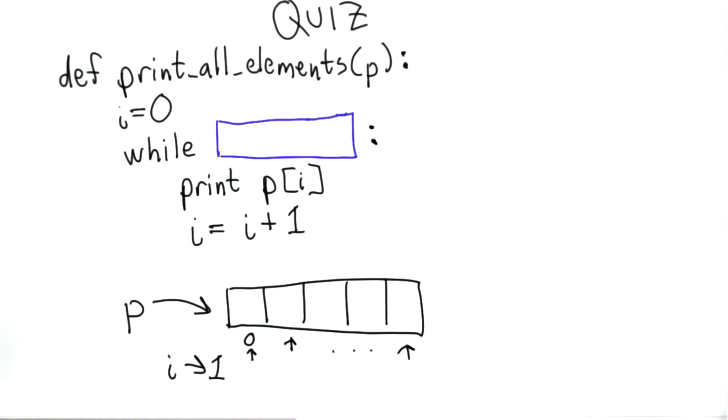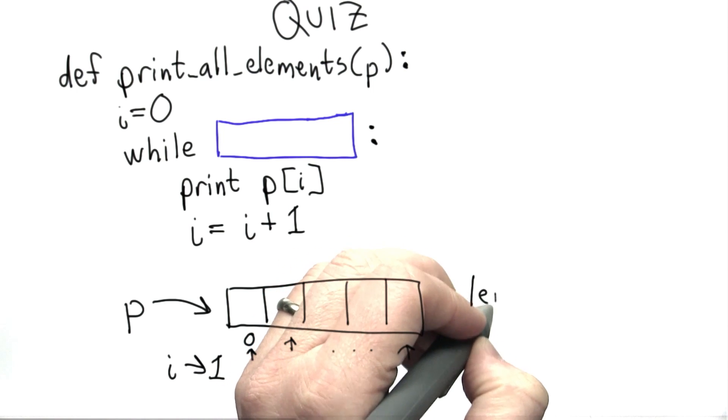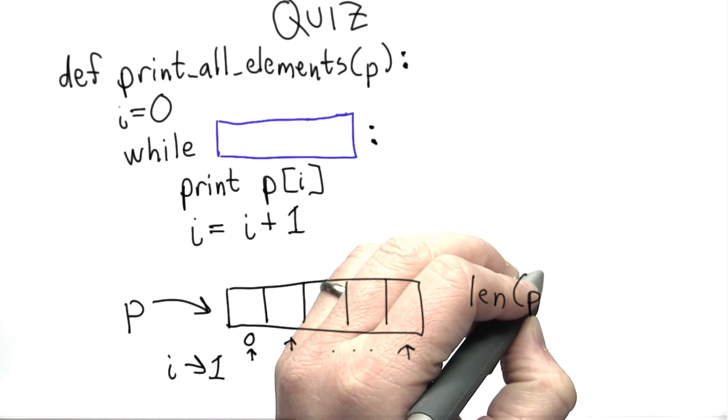We learned about the len operator. The len of a list tells us the number of elements in the list.